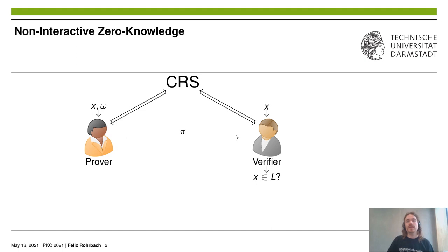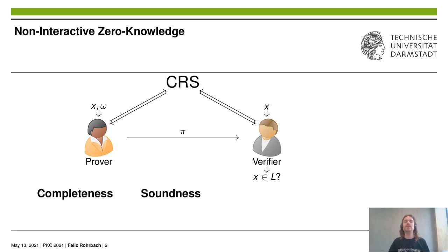We want this protocol to fulfill three properties: completeness, soundness, and Zero-Knowledge. Completeness requires that for statement x in the language L, the prover generates a proof from x and a witness omega, which is then accepted by the verifier with high probability. Soundness, on the other hand, requires that no malicious prover may convince the verifier to accept any statement x not in the language L with considerable probability.